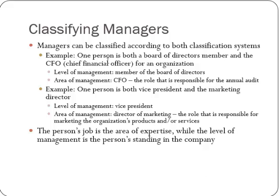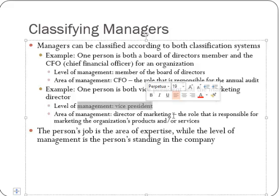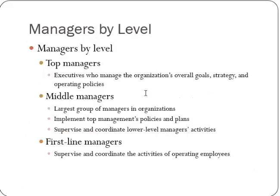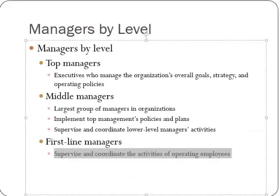For example, one person who is both on the board of directors and the CFO would hold the highest level of management — the board of directors runs the company. A person can be both vice president and a marketing director; the level would be vice president, and the specific area would be marketing. Top managers are executives who manage the overall goals, strategy, and policies. Middle managers implement the goals set by top managers — if top managers say 'we're going to produce a new car,' middle managers work on how to do that and establish the plans. Then lower managers or first-line managers supervise the people actually doing the work.